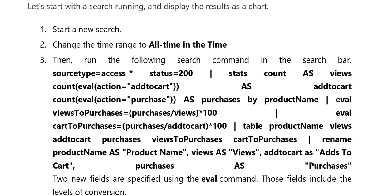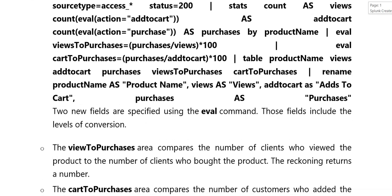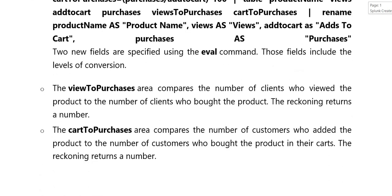In the search bar, put source type equal to access. Status put kia gaya, here we use stats, count as views, count — this is how it is represented. Run this command in the search bar.